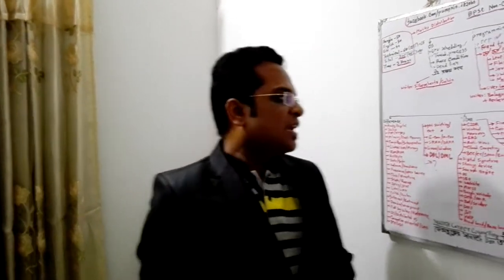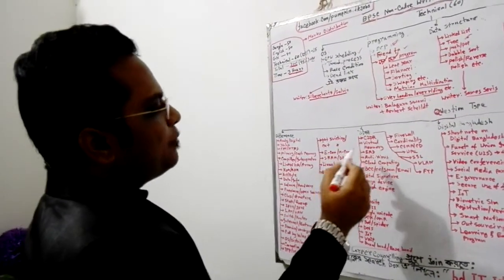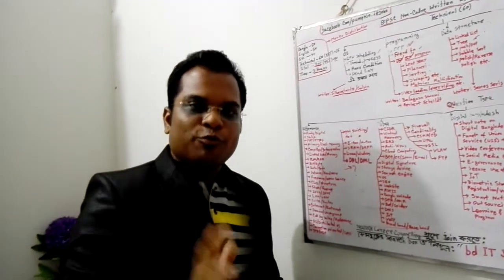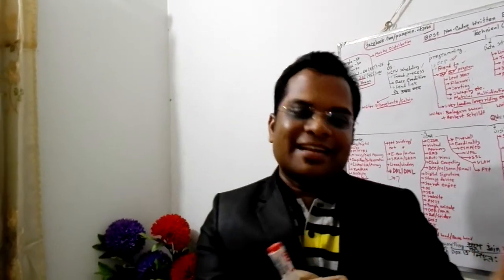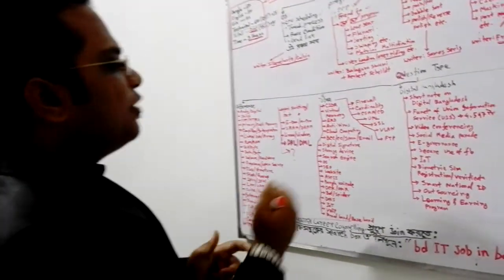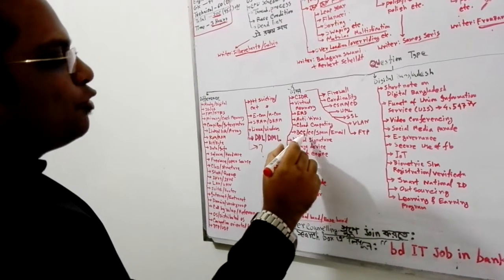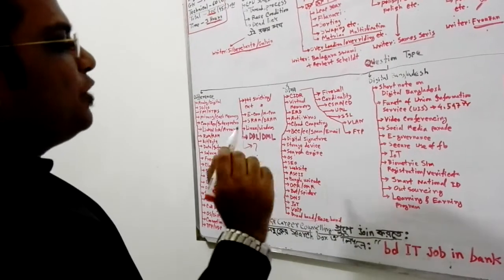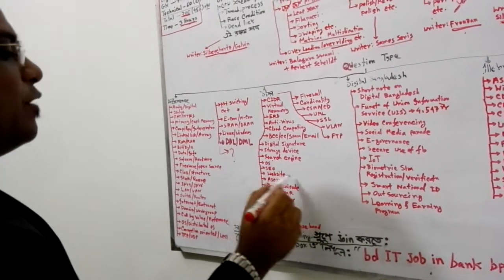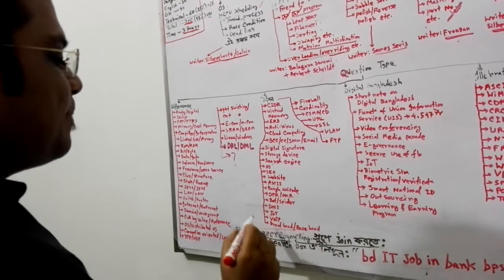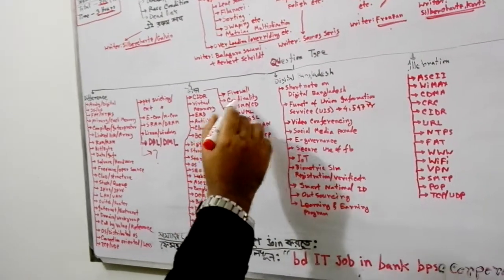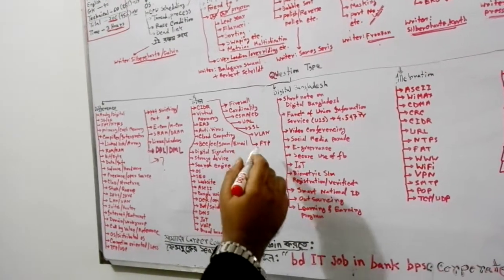People should be aware of topics like multimedia, ER diagram, antivirus, cloud computing, BCC (Blind Carbon Copy), CCC, spam, email, digital signature, storage devices, operating system, SEO, website, ASCII, Bangla Unicode, OCR, OMR, Bot, Spider, DNS, IoT (Internet of Things), VOIP, broadband, baseband, firewall, cardinality, CSMA/CD, UML, SSL, VLAN, and FTP.